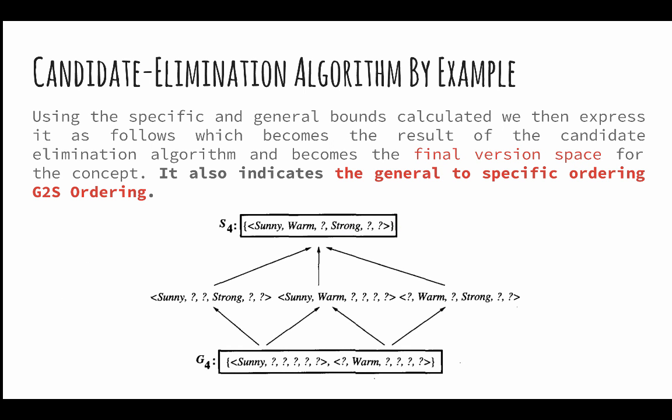The final two boundaries look like G4 and S4. There are different combinations that could be generated using the tuples present in G4 to achieve S4. The space between these two boundaries G4 and S4 is the version space and contains the list of general hypotheses which will result in the true value for enjoy sport concept that Dave wanted to find out. This marks the termination of the candidate elimination algorithm. Thank you.